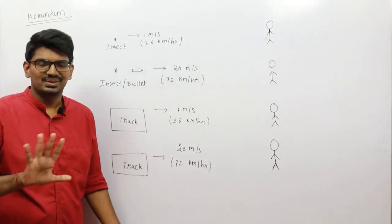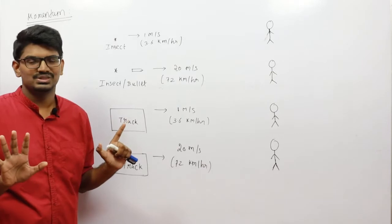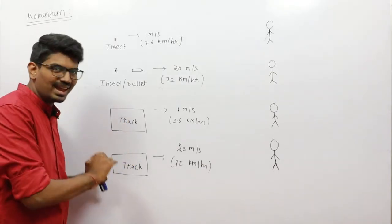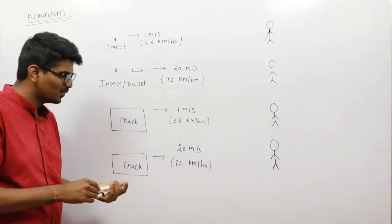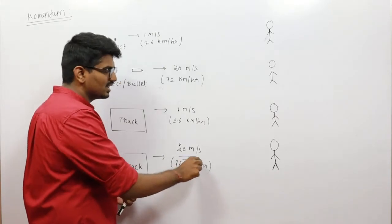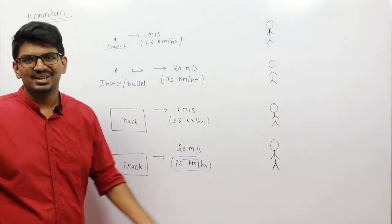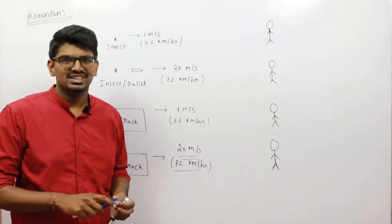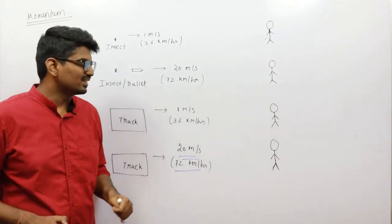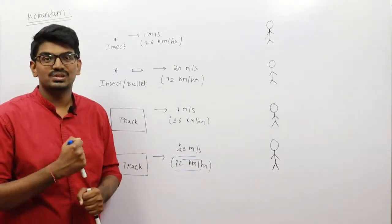Obviously it is going to have an effect — there will be some significant effect. Now take the same truck moving at 72 kilometers per hour, that is 20 meters per second. What will happen? That person will be completely crushed.